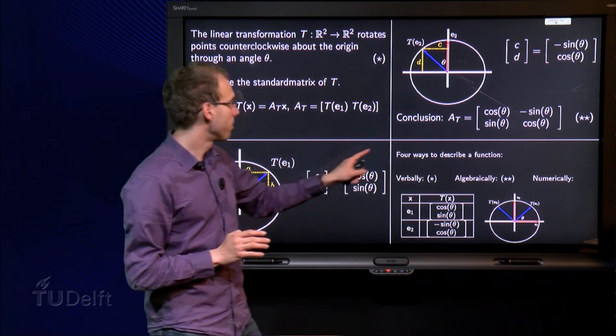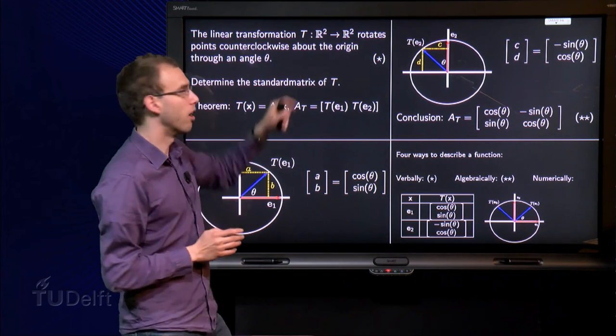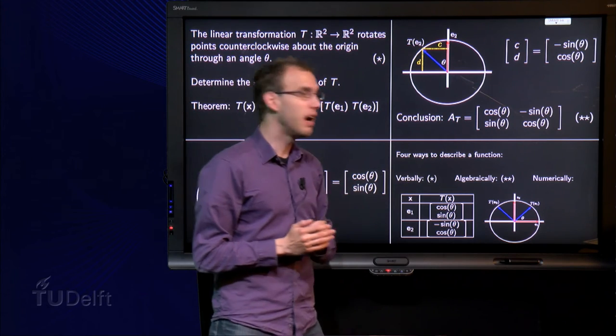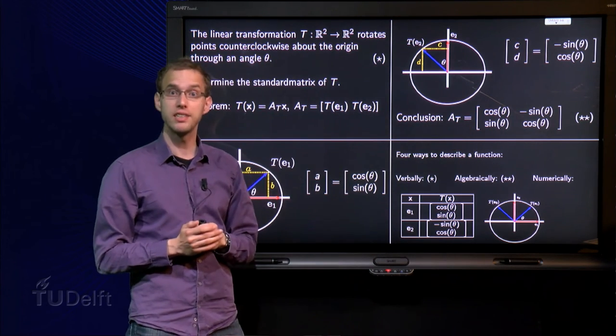Now to summarize, we have four ways to describe a function: verbally, over here, and algebraically, over here, via the matrix of the transformation.